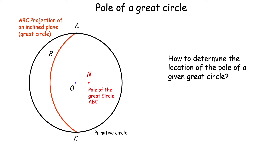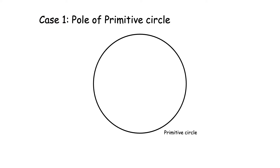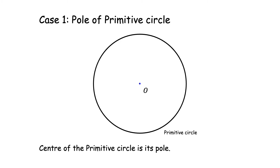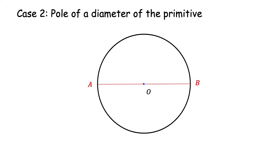Let us begin with the simplest case first. We look at the primitive circle and try to find the pole of the primitive circle. As we saw, the primitive circle represents the horizontal plane, thus its normal is the vertical direction. The vertical direction projects as the center of the primitive, so the center of the primitive itself is the pole of the primitive.